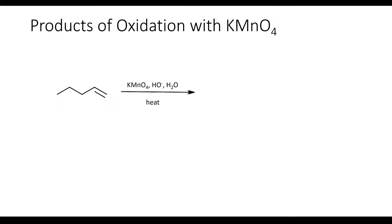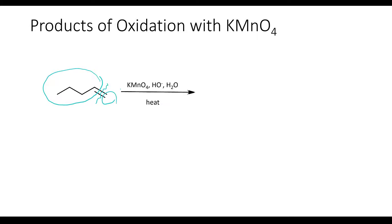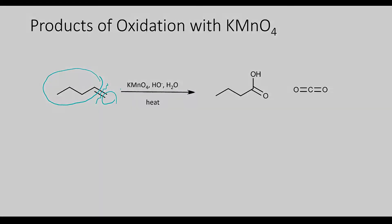Now let's take a look at what products will form when we expose 1-pentene to hot basic potassium permanganate. Under these conditions, the alkene bond will break, and each of the carbons that formerly belonged to the alkene will be doubly bonded to its own oxygen. This portion of the alkene has only one substituent, so this piece is going to be oxidized to a carboxylic acid. The remaining part of the alkene only has hydrogens and is going to get oxidized all the way to carbon dioxide. So our products are butanoic acid and carbon dioxide.